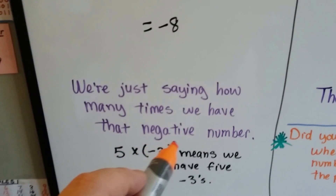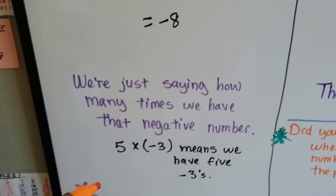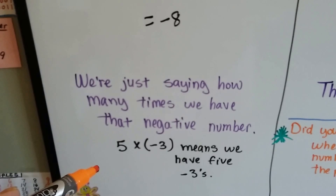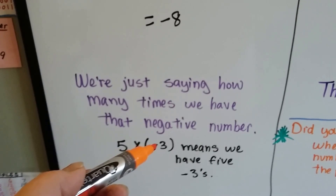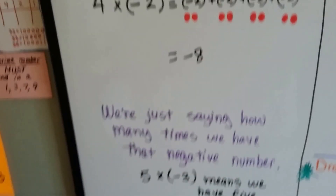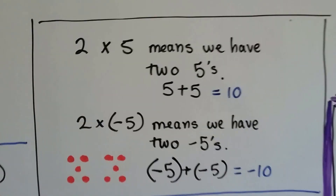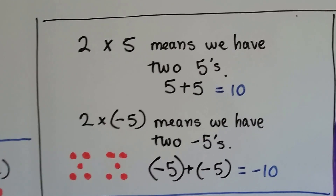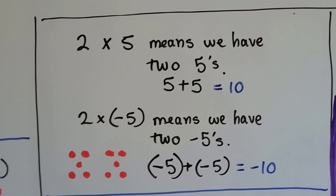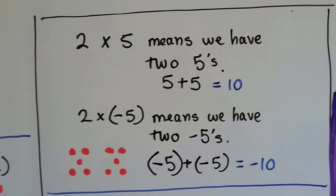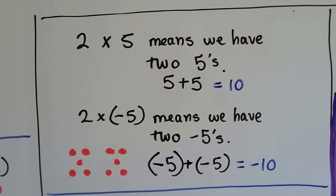5 times negative 3 means we have 5 negative 3s. That would be negative 15. 2 times 5 means we have two 5s — 5 plus 5, that equals 10. 2 times negative 5 means we have two negative 5s: a negative 5 and a negative 5. We've got negative 10.